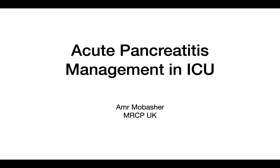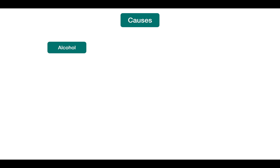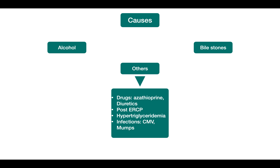Today's topic is acute pancreatitis management in ICU. The two most common causes are alcohol and bile stones. Other causes include medications like azathioprine or diuretics, post-ERCP, hypertriglyceridemia, and infections like cytomegalovirus, Epstein-Barr virus, or mumps. However, alcohol and bile stones remain the most common two causes of acute pancreatitis.